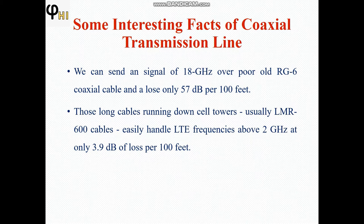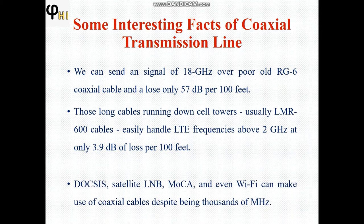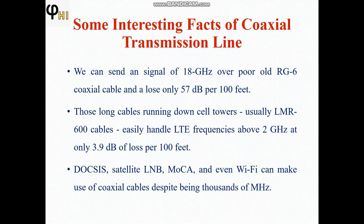We can also use coaxial lines in cell towers, usually LMR-600 cables, which can easily handle LTE frequencies around 2 GHz at only 3.9 dB of loss per 100 feet. DOCSIS, satellite LNB, MoCA, and Wi-Fi can also make use of coaxial cable despite operating at thousands of megahertz.